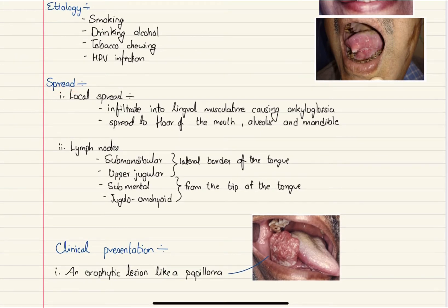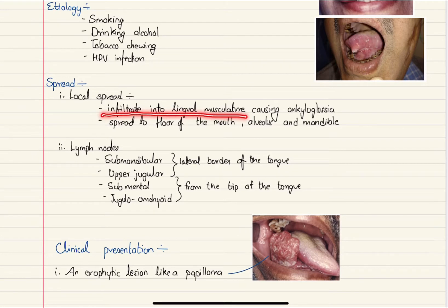Carcinoma of the tongue can spread by two means: local spreading and lymph nodes. The carcinoma might infiltrate into the lingual musculature, causing ankyloglossia — a condition where the tongue is attached to the floor of the mouth and its movement is restricted. Usually it is seen when the frenulum is short, but carcinoma of tongue can also lead to ankyloglossia. The tumor might also spread to the floor of the mouth, to the alveolus where the teeth lie, and to the mandible.